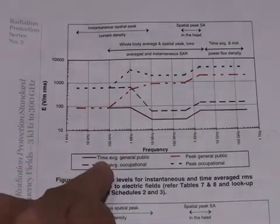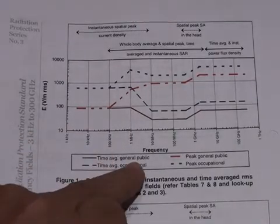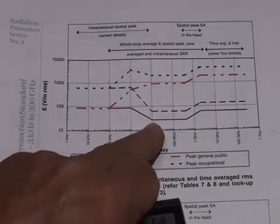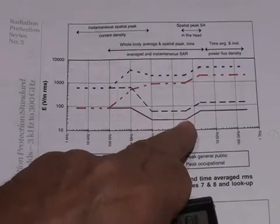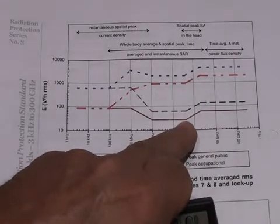One scenario is for what's called the time average general public. Here we see at 10 MHz the limit is 20 volts per meter and this holds true up to around 500 MHz.